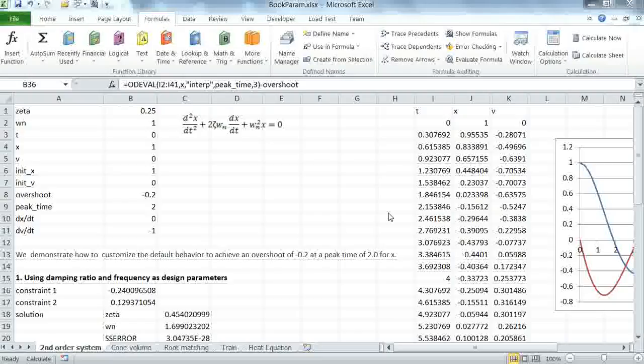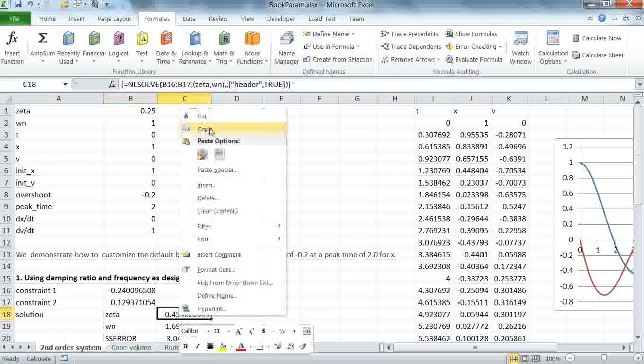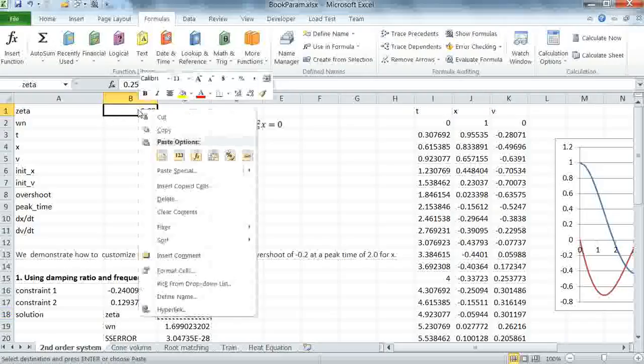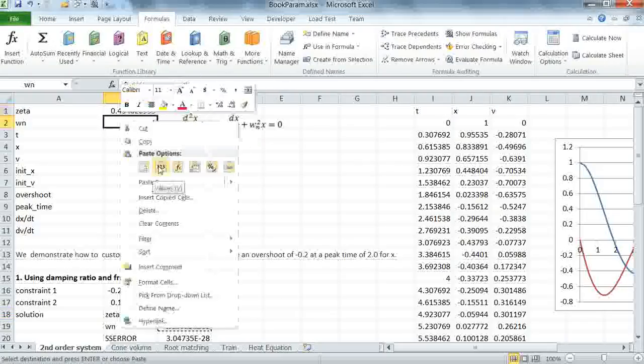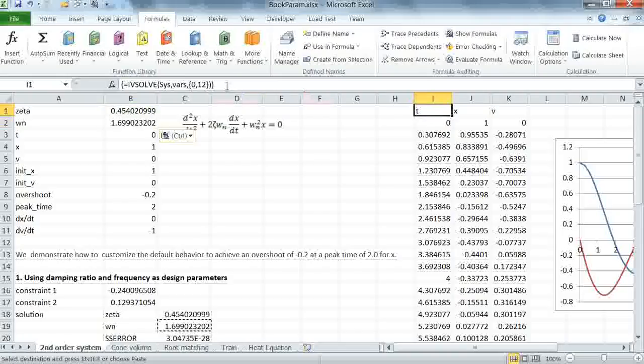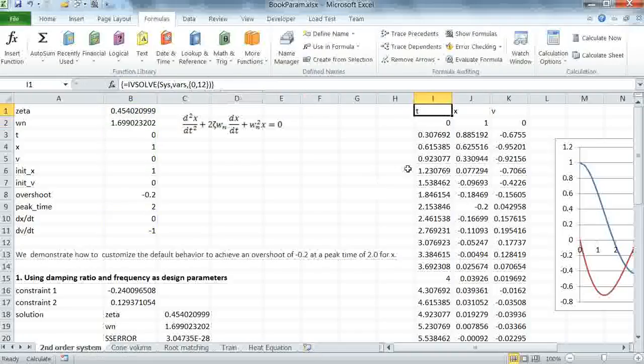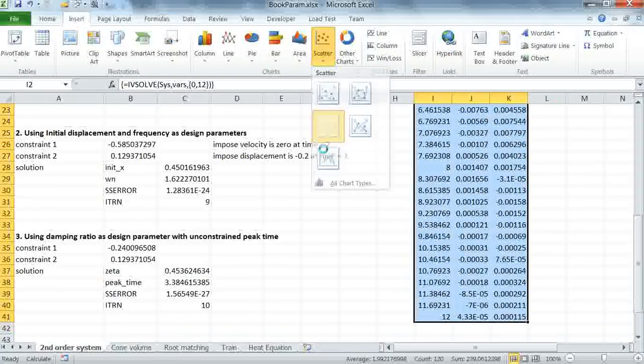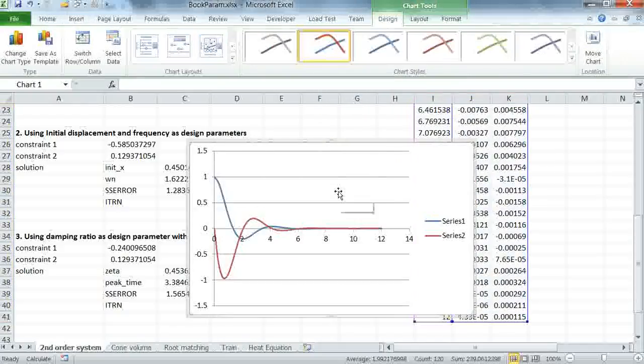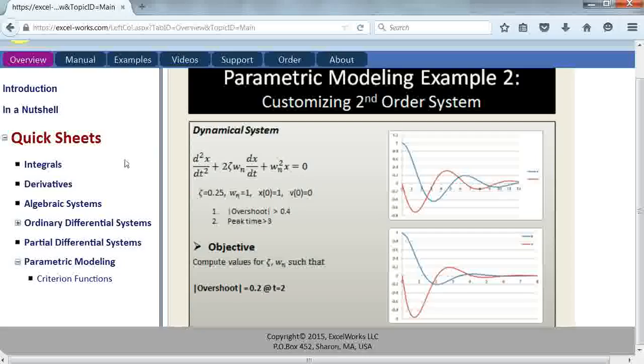Before we conclude this example, let's verify our objective is met once we use the new calculated values for zeta and omega n in the first exercise. What I'm going to do is replace my initial values for zeta and omega n by the new computed values, and then recompute my solution, and then replot it again. So I'm going to select this again. And as you can see, the behavior has changed, and now we actually have the overshoot occurring at minus 0.2 at time equal to 2.